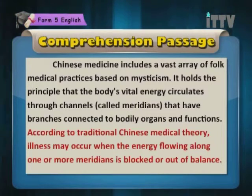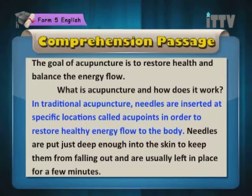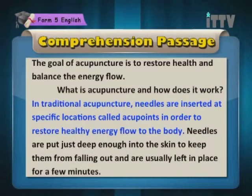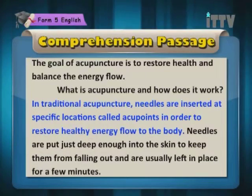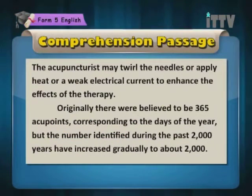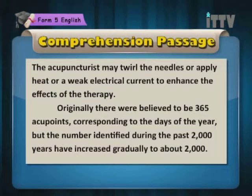In this slide, we see the highlighted part of the passage. This is where we got our main point and supporting details. The goal of acupuncture is to restore health and balance the energy flow. In traditional acupuncture, needles are inserted at specific locations called acupoints in order to restore healthy energy flow to the body. Needles are put just deep enough into the skin to keep them from falling out and are usually left in place for a few minutes. The acupuncturist may twirl the needles or apply heat or a weak electrical current to enhance the effects of the therapy.